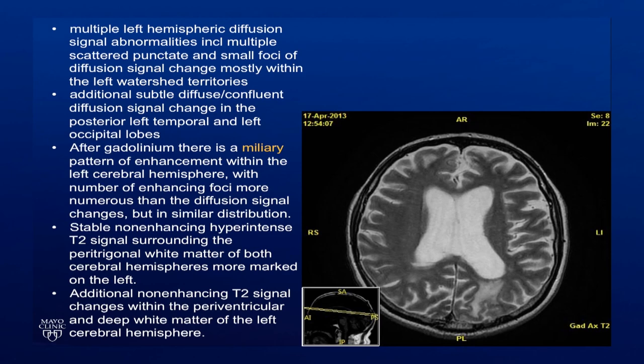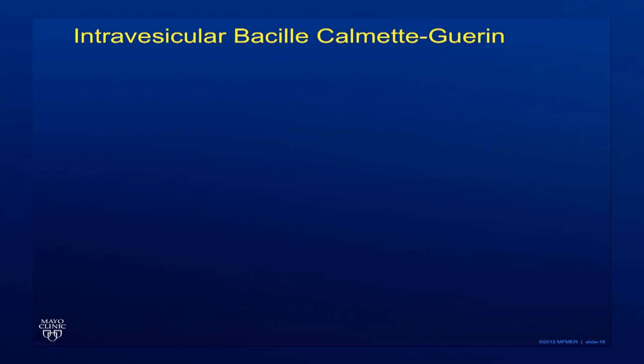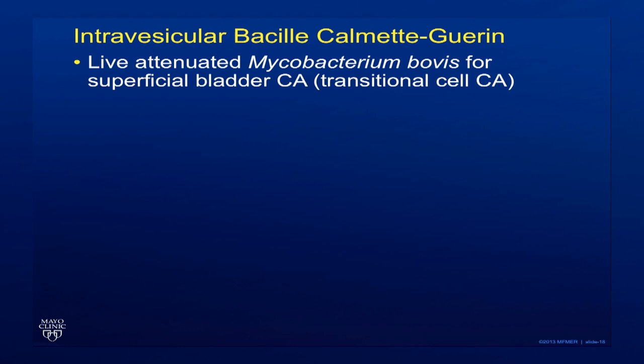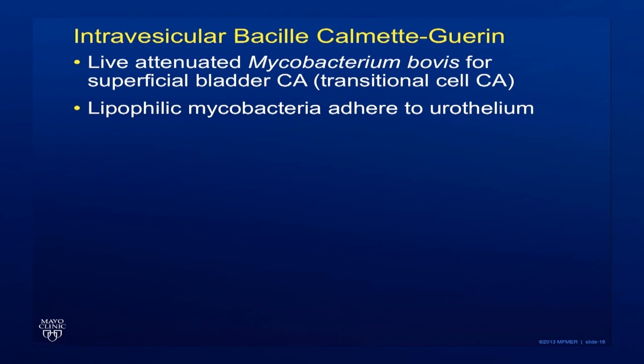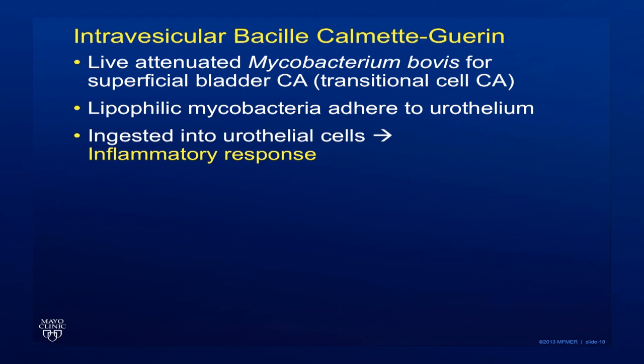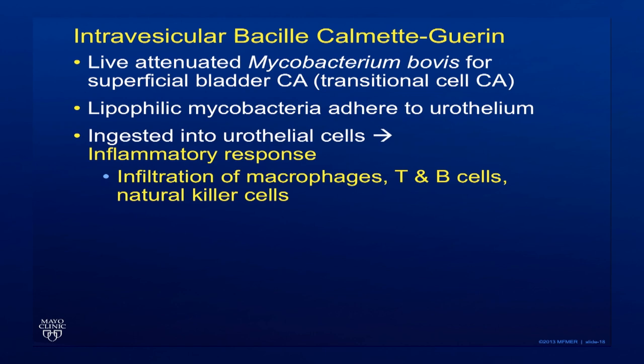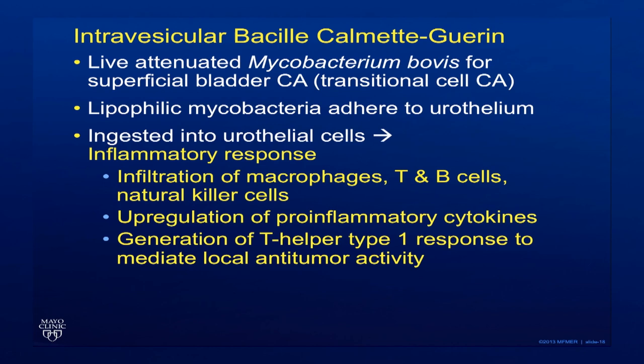Let's talk about intravesicular BCG, or bacille Calmette-Guérin. This is the installation of live attenuated Mycobacterium bovis into the bladder to treat superficial bladder cancer, or transitional cell cancer. The mycobacteria are lipophilic, so they adhere to the urothelium. They are ingested into the urothelial cells where they elicit an inflammatory response, leading to infiltration of macrophages, T and B cells, and natural killer cells, upregulation of pro-inflammatory cytokines, and other inflammatory responses which should cause anti-tumor activity.